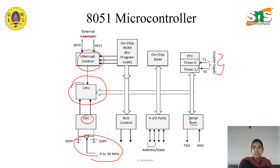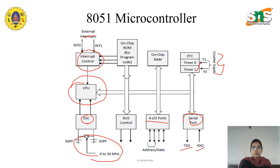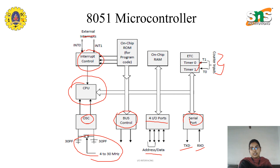We have the serial port, as every data is communicated through serial communication. Every transmission and receiving of data should be in serial format, so the serial port is used for the transmitter and receiver. We also have four input/output ports through which the address or data buses are enabled, along with bus control to manage these I/O ports.